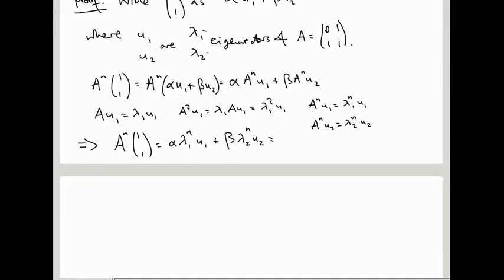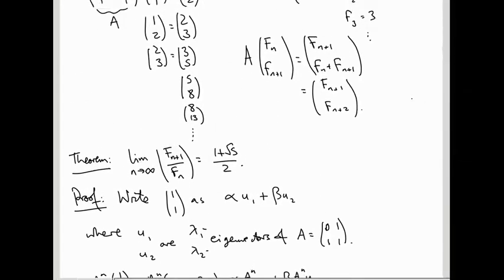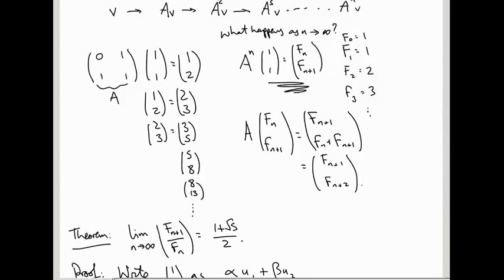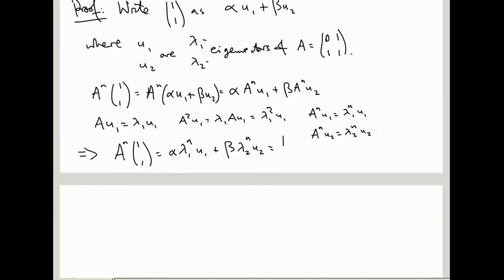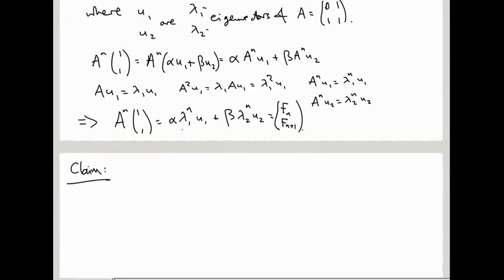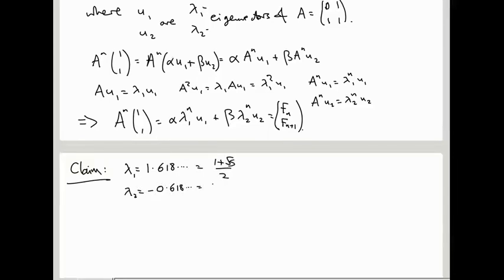So this says A^n·[1,1] = α·λ1^n·u1 + β·λ2^n·u2. And remember this A^n·[1,1] is a vector of Fibonacci numbers — so this is [Fn, Fn+1]. The claim is that λ1 equals the golden ratio, approximately 1.618, and λ2 is approximately −0.618. In other words, λ1 = (1 + √5)/2 and λ2 = (1 − √5)/2.